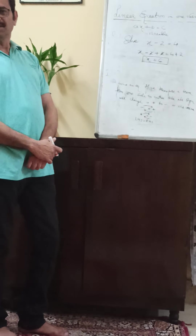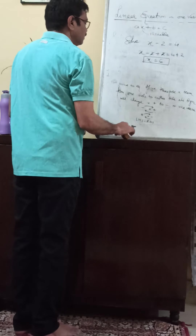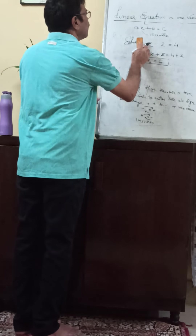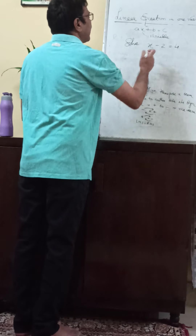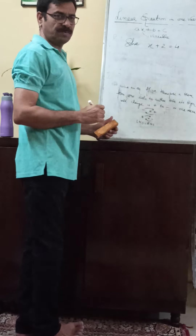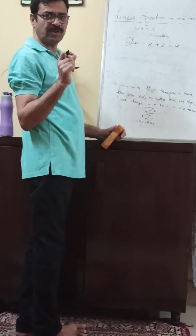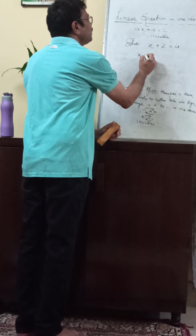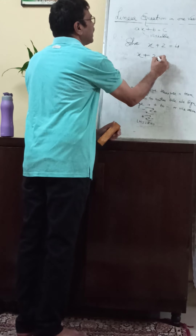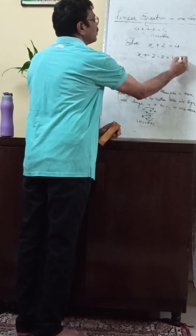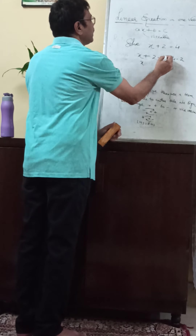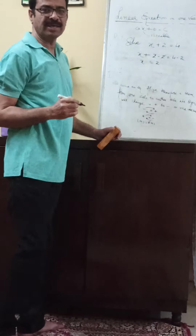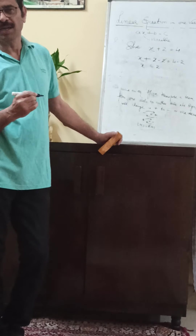Now I will apply the second rule. Solve: x plus two is equal to four. This is an equation in one variable. I am subtracting two from both sides of the equation. This two will cancel with this two, so x is equal to two. So x equals two is the solution of the equation.